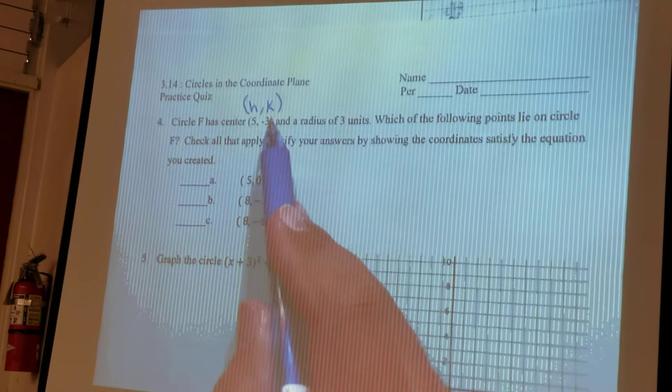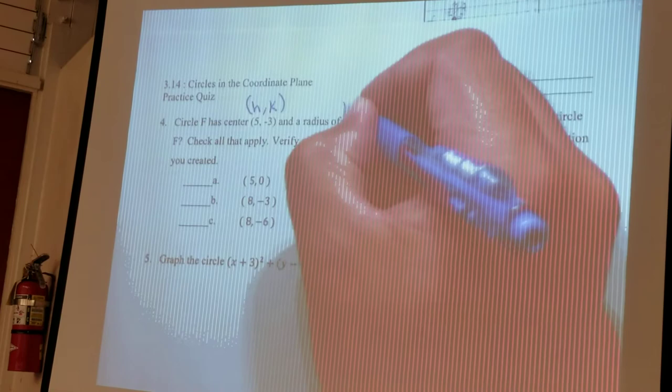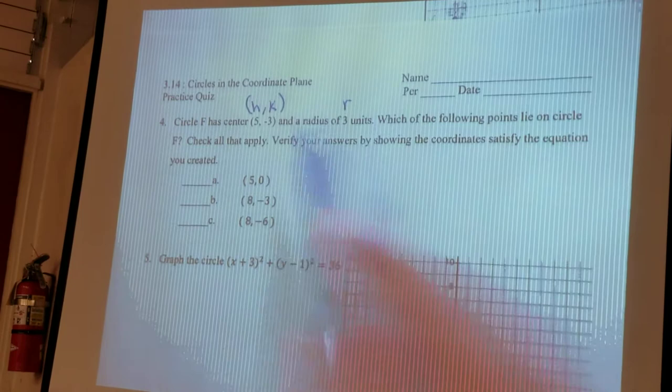Alright, so it's telling us that H is equal to 5, and K is equal to negative 3. Okay, afterwards, it says that your radius is equal to 3, so that's your R. Your R is equal to 3. And you only need these three things, now you can write the equation of the circle.